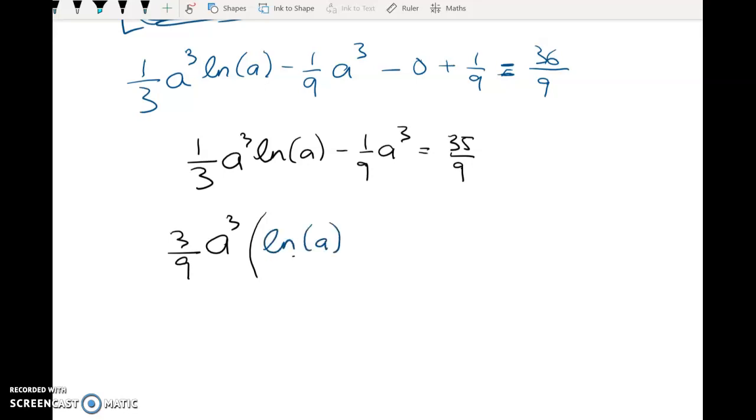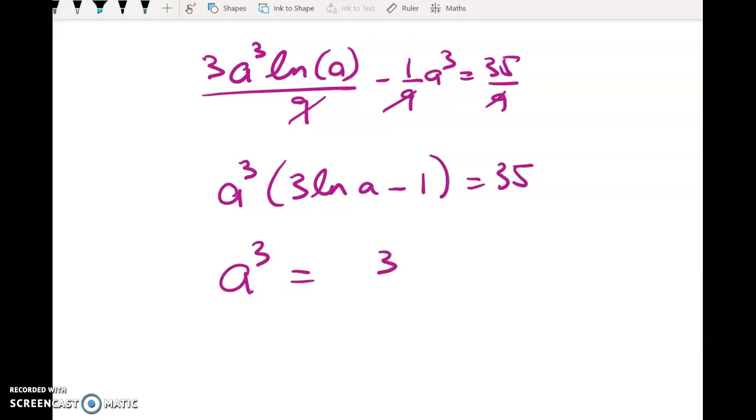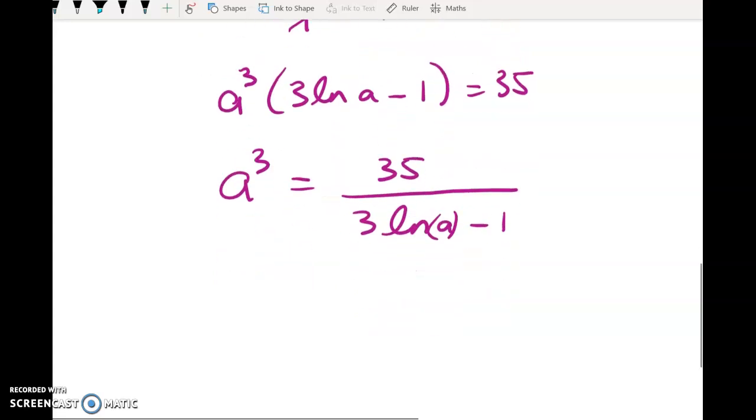I mean, obviously there are lots of ways you can do this from this point. So we've got A cubed, 3 A cubed log of A, on 9, minus 1 ninth of A cubed, is equal to 35 over 9. Timesing everything through by 9 gives me A cubed into 3 log A minus 1, is equal to 35. So we're just about there, A cubed is equal to this. Remember, it's a show that question, so do not skip steps. Finally, we get what we want, which is that A is equal to all of that, to the power of one third.